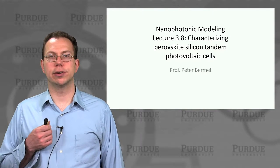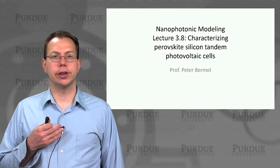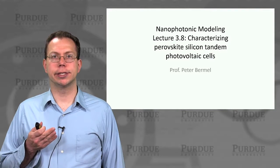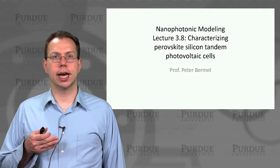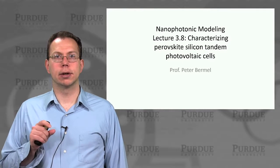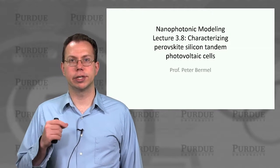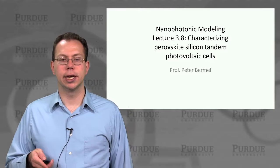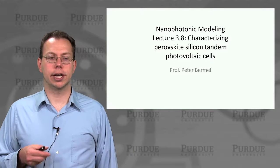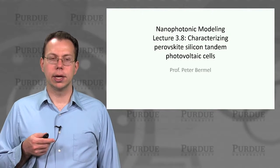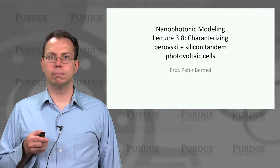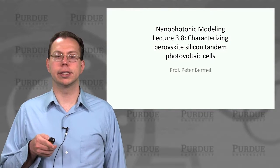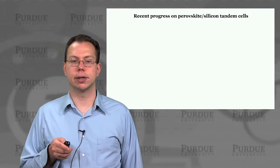In the last lecture we were talking about how we can use flexible flux plane methods to accurately capture absorption of individual layers, which is helpful for tandem photovoltaic applications. Now we're going to look at a specific type of tandem photovoltaic system which has gotten a lot of attention recently, called the perovskite-silicon tandem cell.